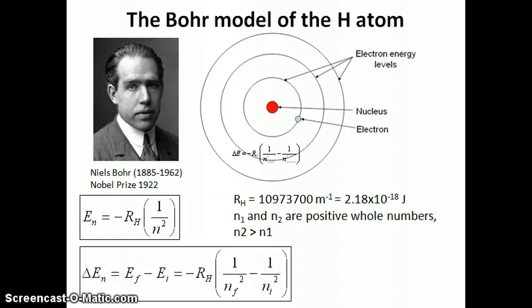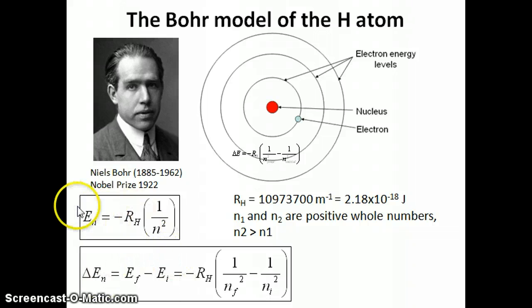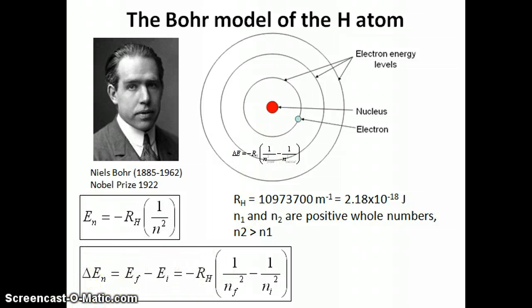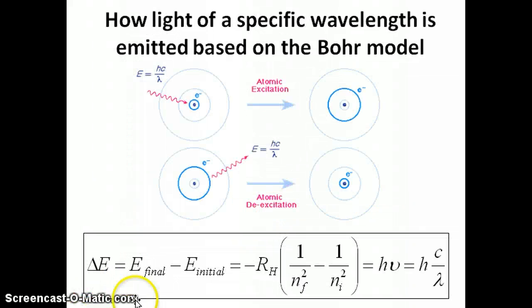Hi everyone. This is going to be the last of the Bohr model videos, and in this video I really just want to walk you through another example of doing calculations with the Bohr equations. Remember that there are two of them: the energy of the given orbit, and the energy of the electronic transition, which you can relate to the energy of the photon being emitted or absorbed by the electron as a result of the transfer of the electron from one orbit to another.